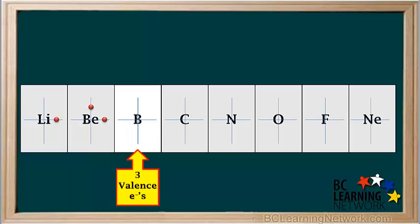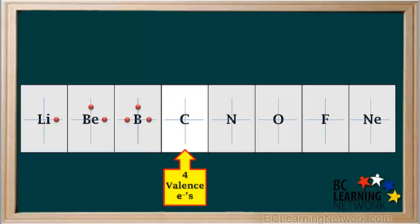Now we'll move on to boron, which is in group 3 and has three valence electrons. These three valence electrons are usually added to form a triangle. Now we'll move on to carbon, which is in group 14 and has four valence electrons. One electron is added to each line of the cross.